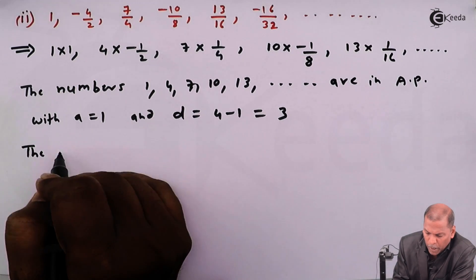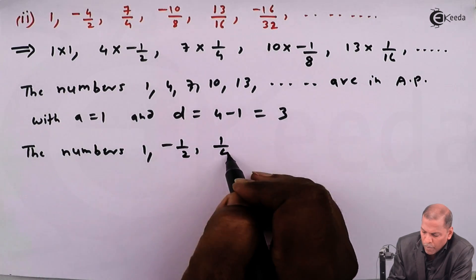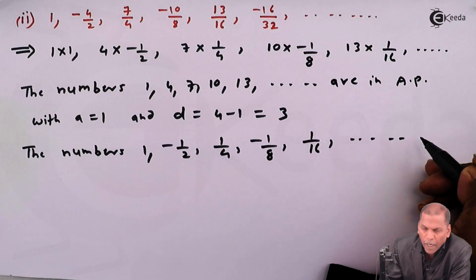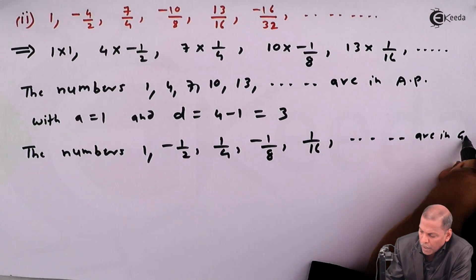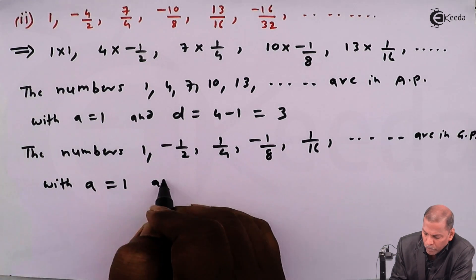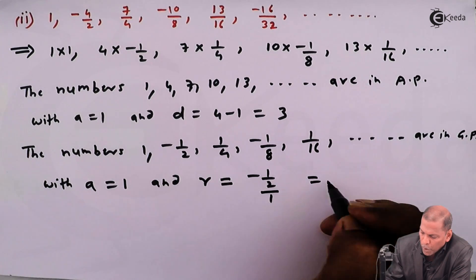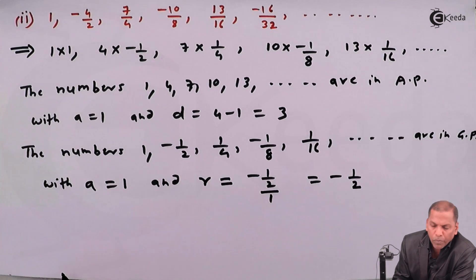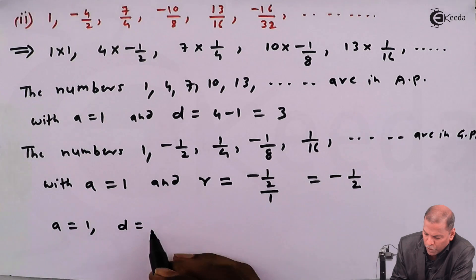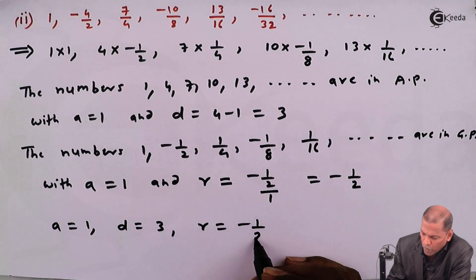The second numbers are 1, -1/2, 1/4, -1/8, 1/16, and so on. These are in GP with first term a = 1 and common ratio r = (-1/2) / 1 = -1/2.